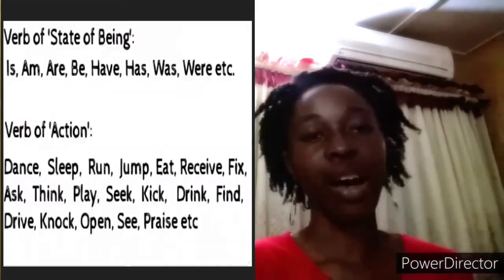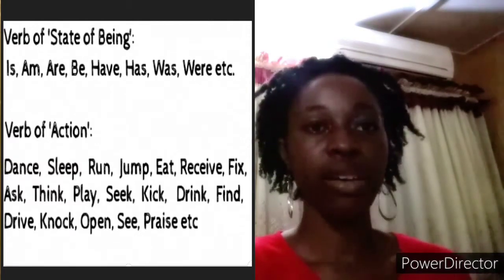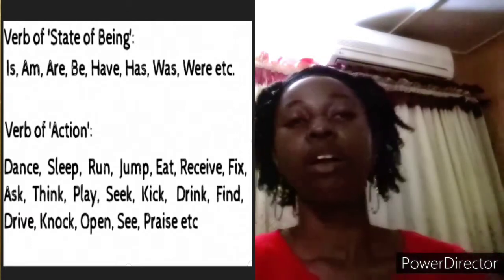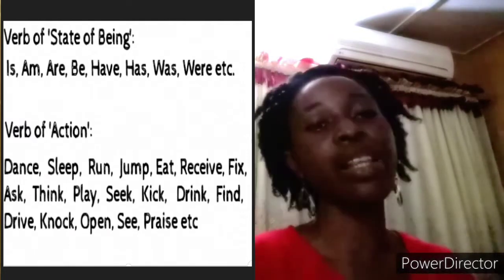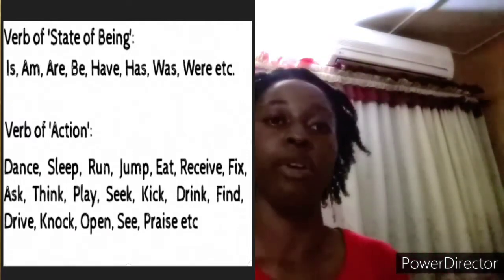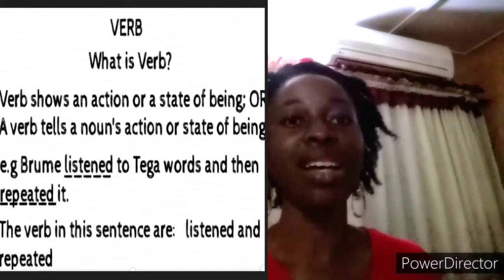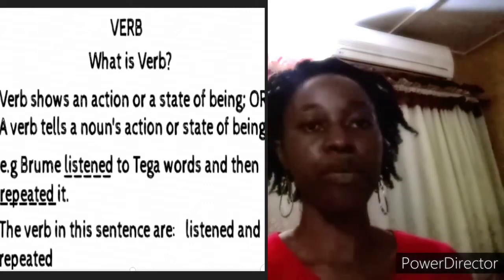Examples of verb as a state of being: is, am, are, was, has, had, have, be. Examples of verb of action: sleep, drink, jump, run, eat, pray, stand, sit — those are examples of action verbs. When you use the verb in a sentence, you can say: 'Brume listened to Tega's words and then repeated it.' The verbs there are 'listened' and 'repeated' because they are the action words in that sentence.